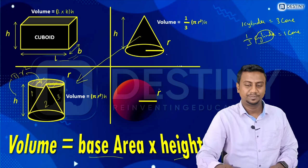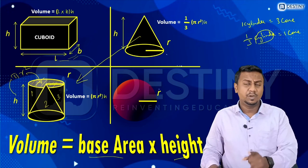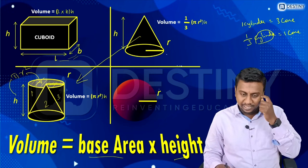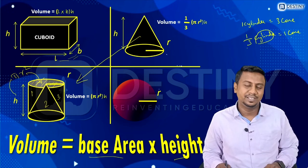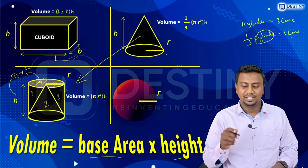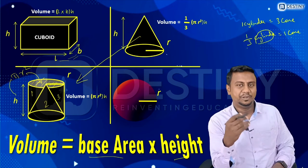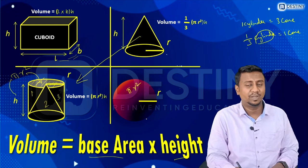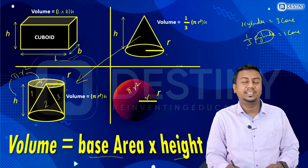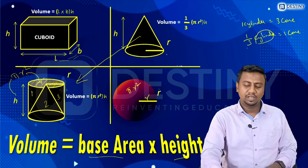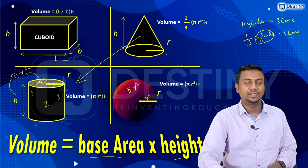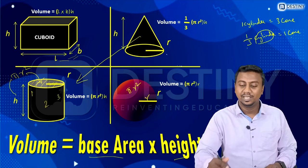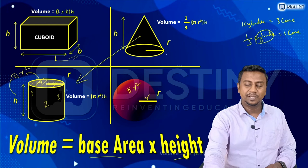The volume of a cone is one-third π r squared h. Now moving on to the sphere — for a sphere, we don't have a clear base area or height. We can approximate the base area as π r squared and the height as r, giving π r cubed. However, π r cubed is not the volume of a sphere — the correct formula is four-thirds π r cubed.